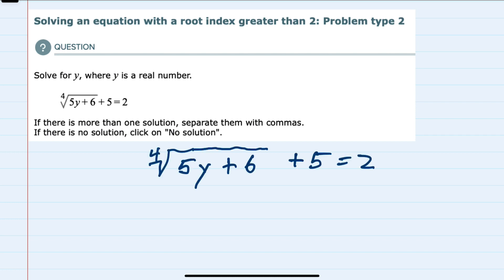We're asked to solve for y and we're told that y is a real number. So my first step when I have a radical in an expression that I'm trying to solve would be to try to isolate that radical on one side of the equation. And here I can do that by subtracting the 5 from both sides.